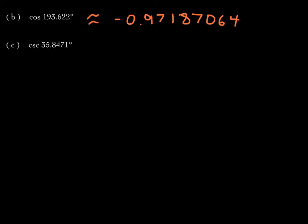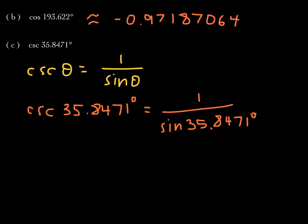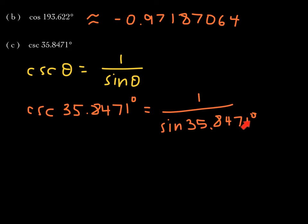The next one is cosecant of 35.8471 degrees. Our calculator doesn't have a cosecant button, but we can use the reciprocal identity to help us here. We know from earlier studies that cosecant of theta is equivalent to 1 over sine of theta. So applying this here, cosecant of 35.8471 degrees is equivalent to 1 over sine of 35.8471 degrees. What I'm going to do is punch in sine of 35.8471 degrees first — I punch in the denominator — press equals, and then reciprocate my answer.